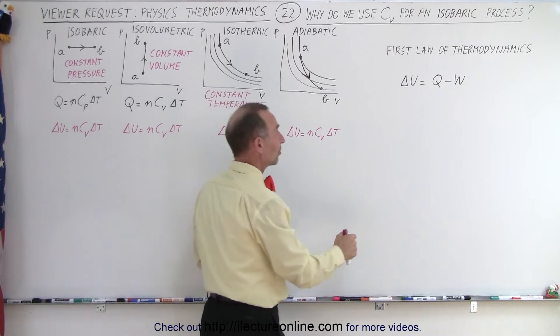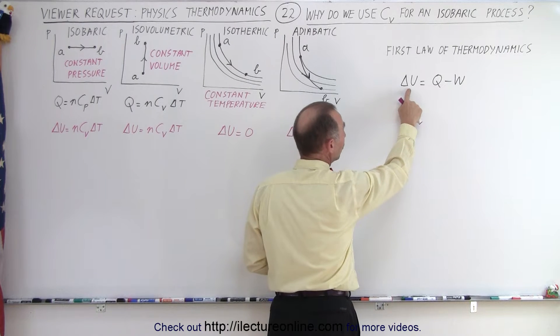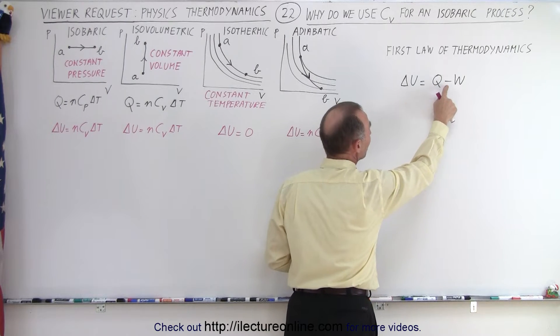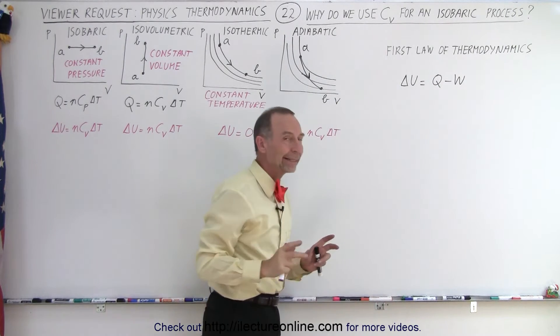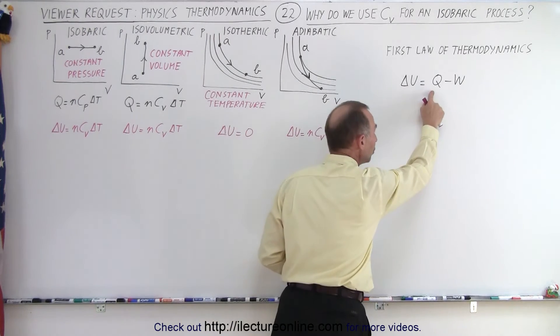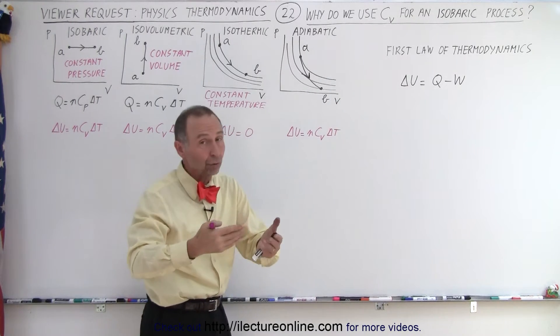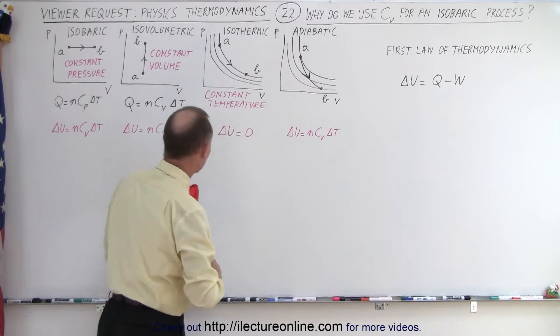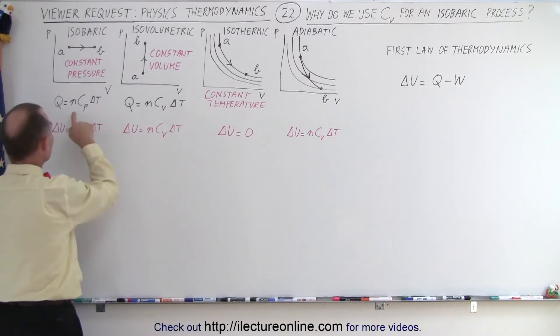Now the first law of thermodynamics tells us that the change in internal energy is equal to the heat added to the gas minus the work done by the gas. And so, when we try to calculate Q, the heat added to the gas, or the heat taken away from the gas, depending upon if Q is positive or negative, well, it can be calculated like this.